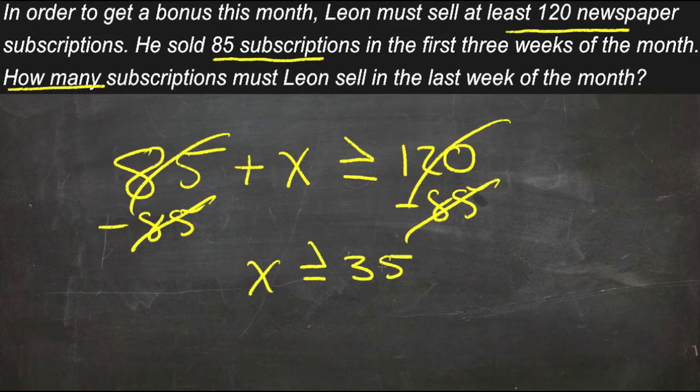Which tells us that as long as he sells at least 35 subscriptions in the last week, his total for the month will be 120, because 85 and 35 are 120.